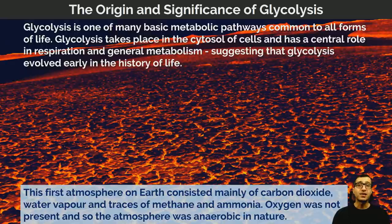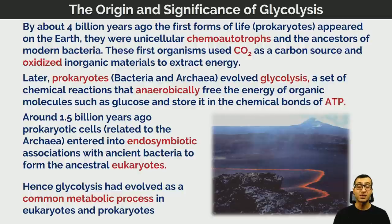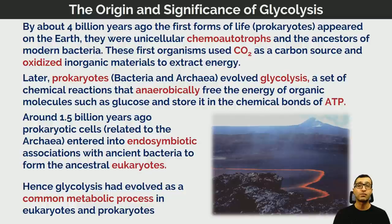By about four billion years ago, the very first forms of life appeared on Earth — these were prokaryotic organisms. We know this because if we examine rocks older than about four billion years, we don't find any traces of fossils of these single-celled organisms. Once you go past about four billion years, you find rocks containing these very simple early ancestors of the prokaryotes.